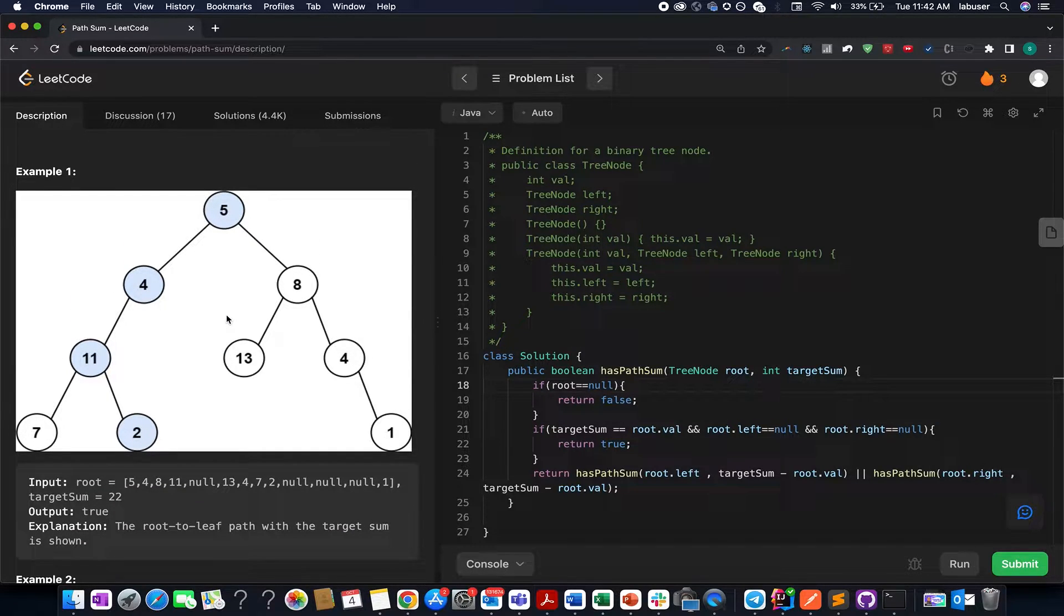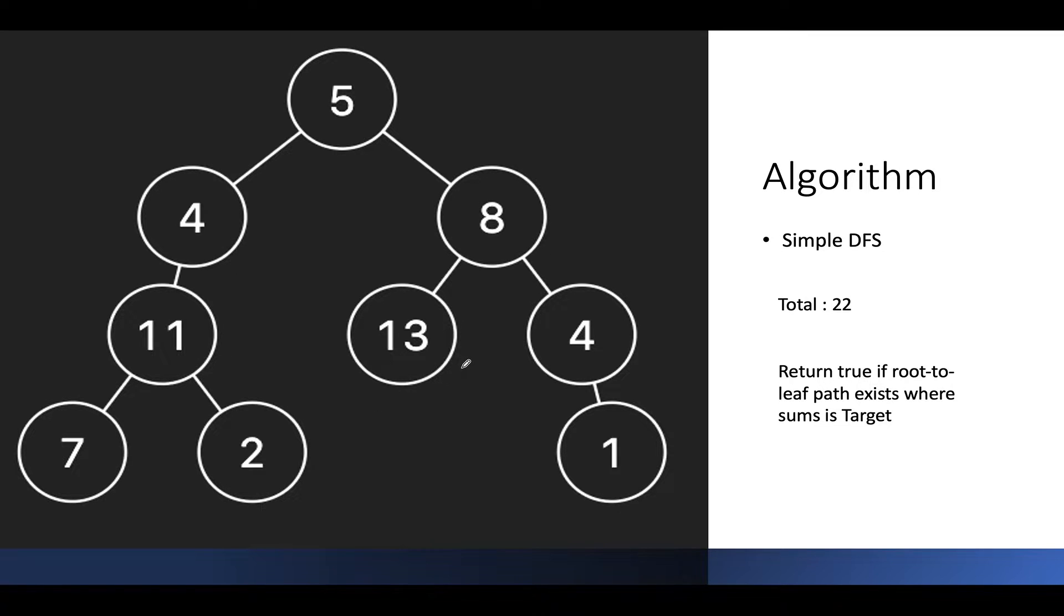Here you are given a binary tree. I have taken the same example and you are given a total value which is 22 in this case. What will I do? I'll perform the DFS traversal and I'll use recursion for this, and I'll keep track of the target sum that I'm looking for as I traverse to the child nodes.